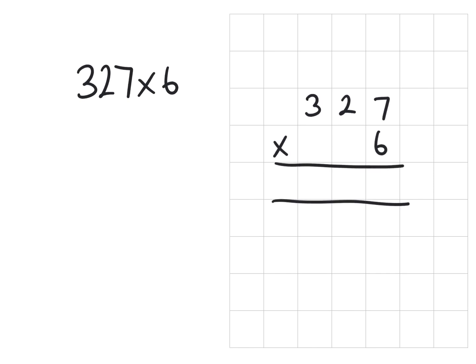First of all we have our units. So we have 6 times 7. Everything always comes from the 6 here. So first of all 6 times 7 is 42 and we're going to place the 2 into the units and carry the 4 into the tens for 40.